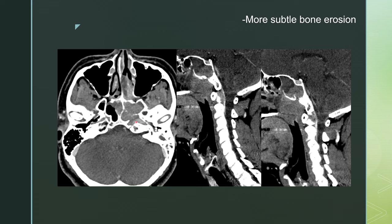Here is a more subtle case of bone erosion. On the axial image, you can see discontinuity of the posterolateral wall of the sphenoid sinus with soft tissue density material within the sinus itself. On the sagittal view, you can see a defect extending from the nasopharyngeal mass into the sphenoid sinus, and an even more subtle defect in the dorsal aspect of the clivus with soft tissue on either side going ventral to the basilar artery. This also counts as bony erosion.